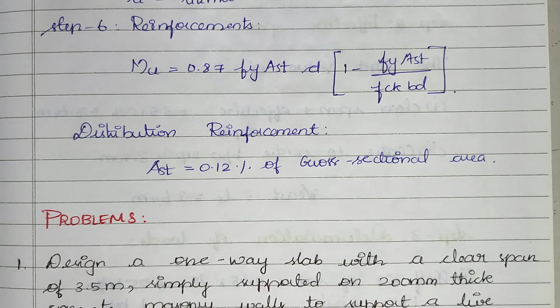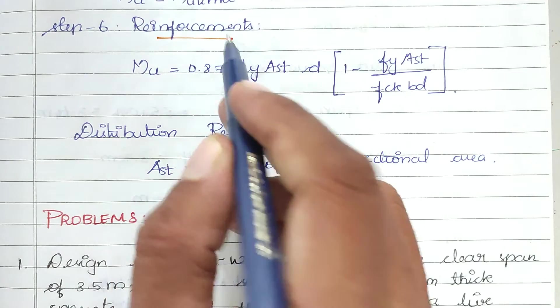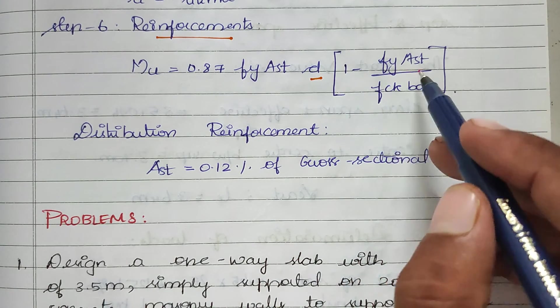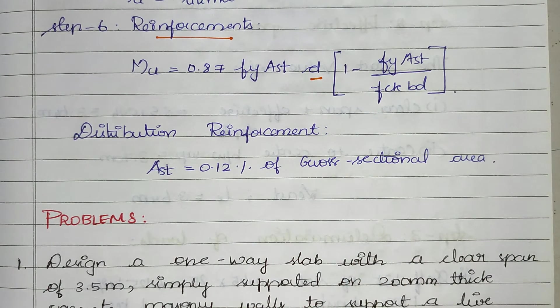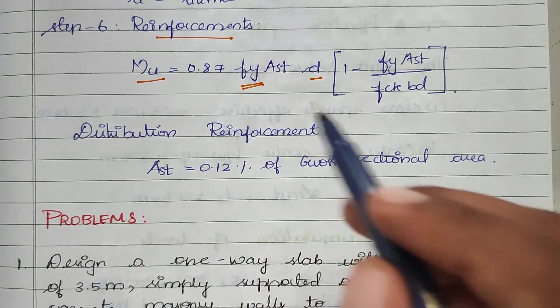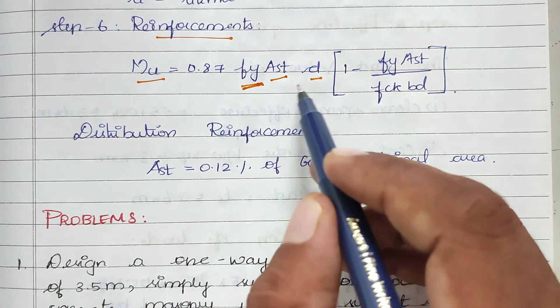After determining whether the reinforcement section is over-reinforced, under-reinforced, or balanced, we find the area of reinforcement using the formula: Mu = 0.87 fy Ast d (1 - fy Ast / fck bd).